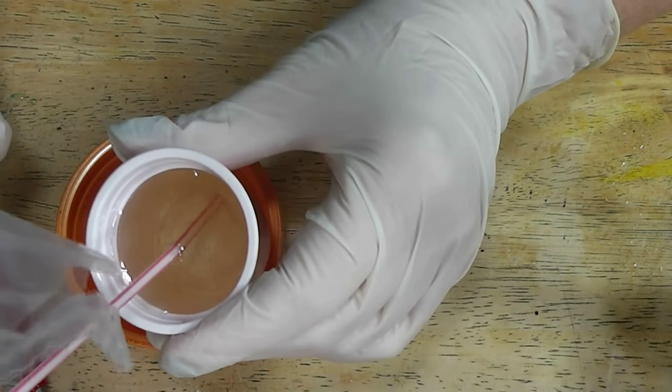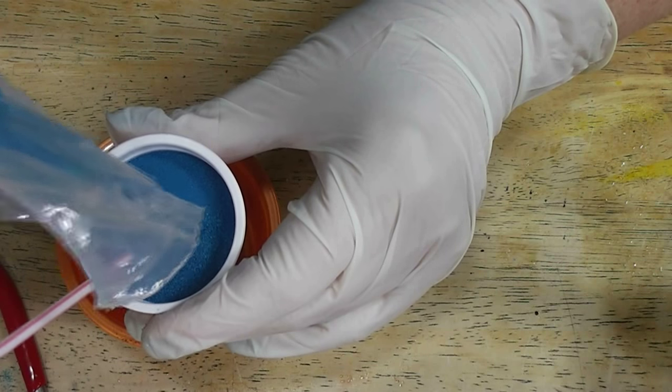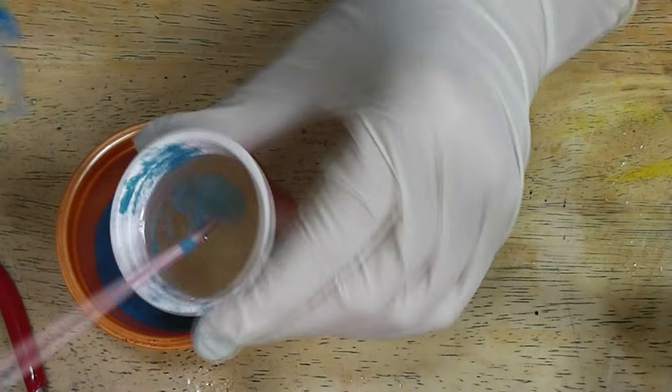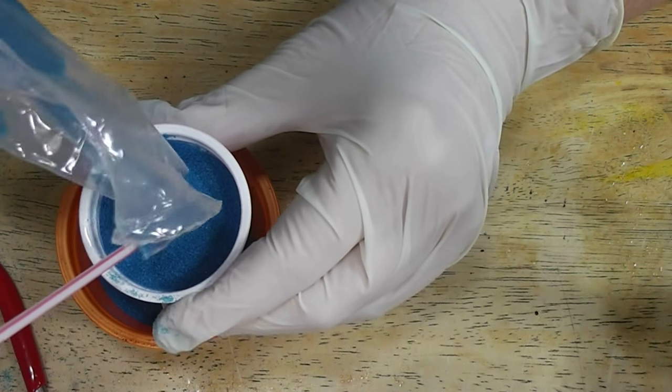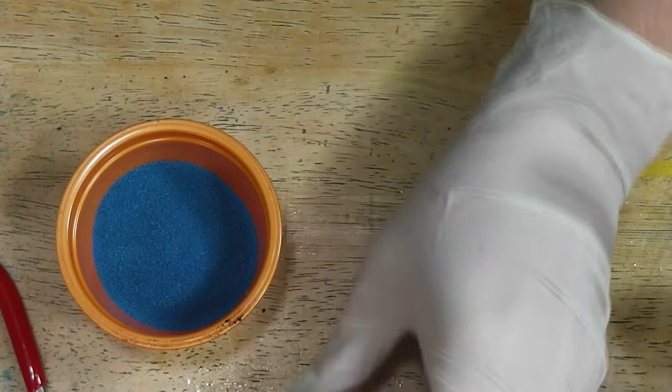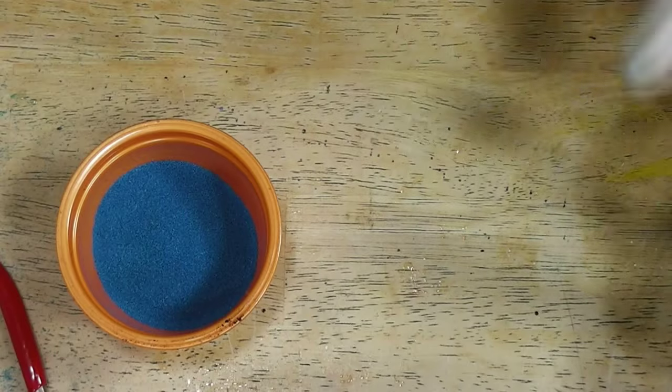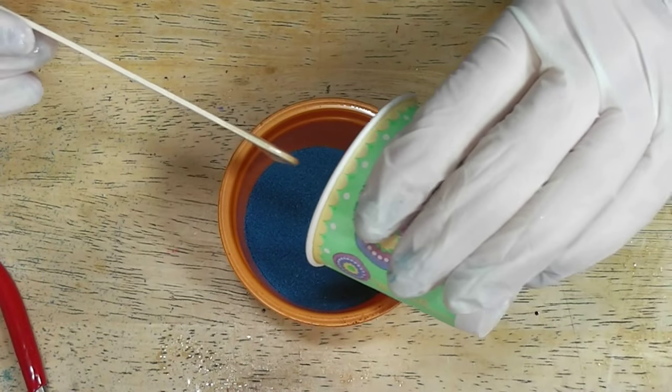And what I'm going to do, I'm actually going to use the top of our project. What I want is I want more than what will fill this. I'd rather waste a little than not have enough. So I'm just using that. I want about one and a half times the amount of sand I think I need. Now I'm going to take just a little tiny bit of resin.